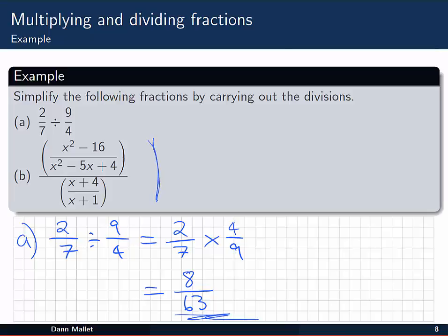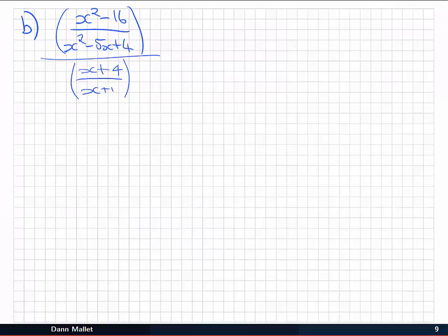Have a go now if you like at this rather long version of an example. You can see that there's actually going to be some factorising that you need to do in there first. Have a go at that one now. Now there's a few places you could start here. One is to work on factorising the quadratics on the top. But what I'm going to do is immediately get rid of this main division that's going on. So I'm going to rewrite this as (x² - 16)/(x² - 5x + 4). That's the numerator of the main division.